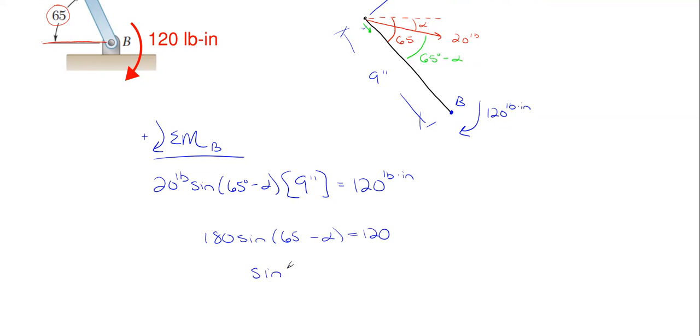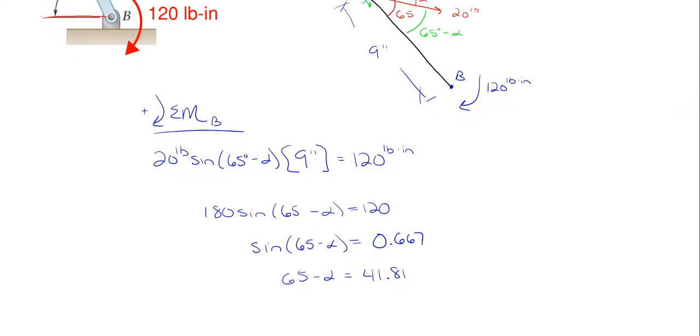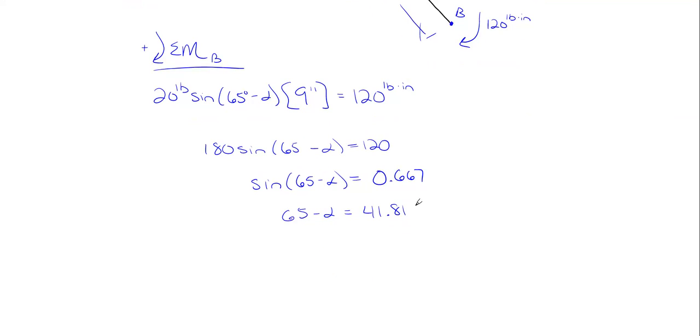So then the sine of 65 minus alpha, when you take 180 to the opposite side, you get 0.667. So then you would take the sine inverse of both sides, and we would end up with 65 minus alpha is equal to 41.81 when you take the sine inverse of 0.667. And keep in mind, your calculators have to be in degrees here.